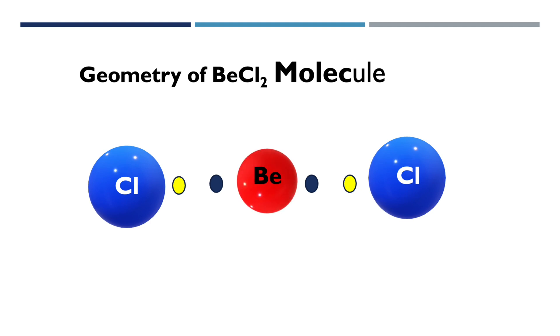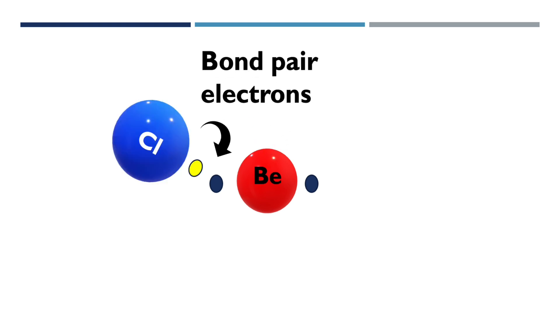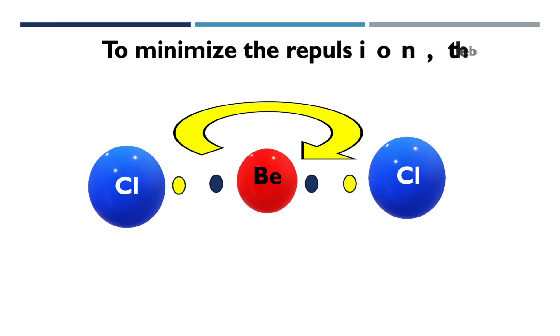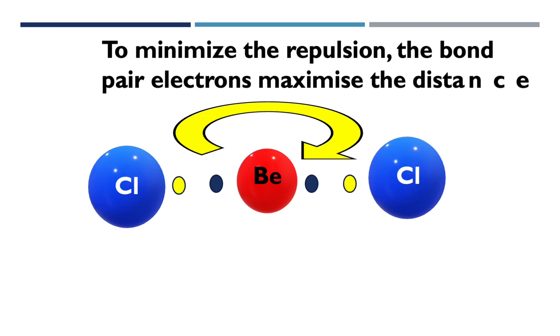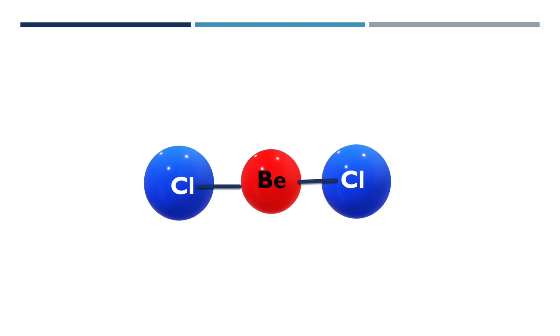VSEPR theory helps predict the geometry of a molecule based on the number of electron pairs around the central atom. According to VSEPR theory, valence electron pairs repel each other due to negative charge. These electron pairs try to occupy positions that minimize repulsion and maximize the distance between them.